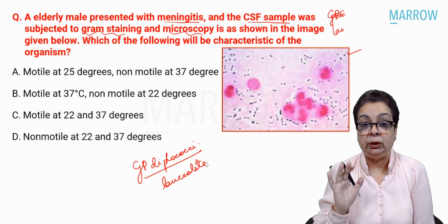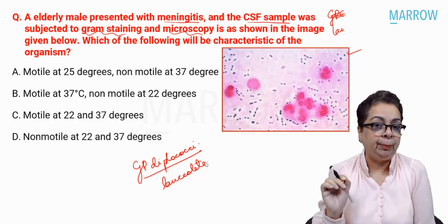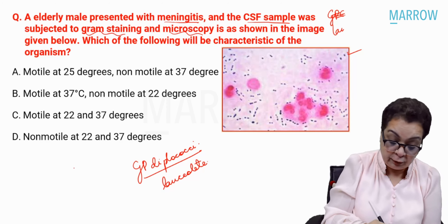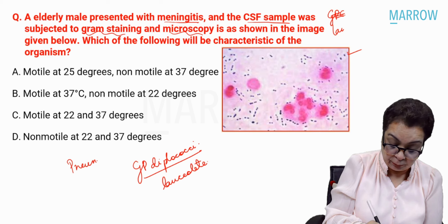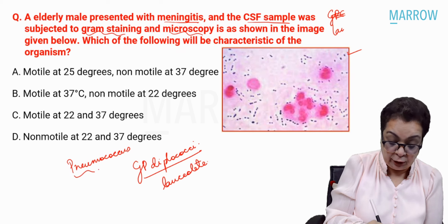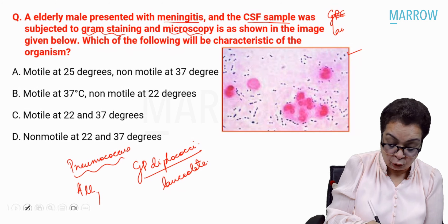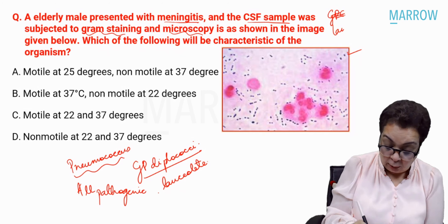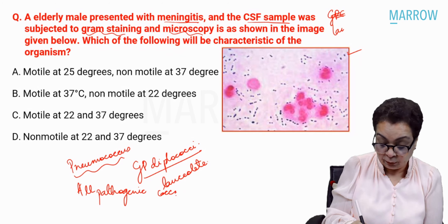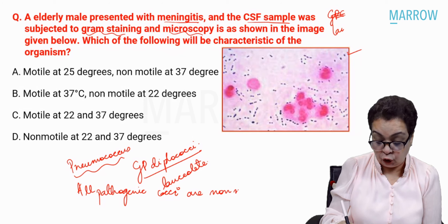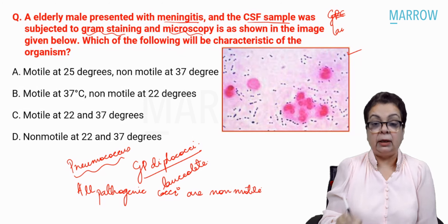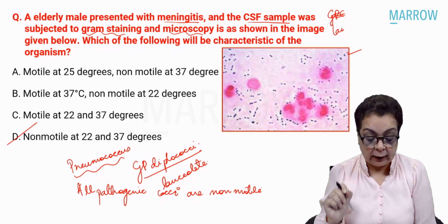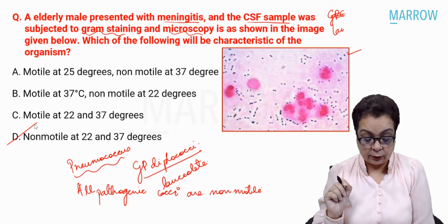If you saw gram-positive diplococci which were lanceolate-shaped, obviously we are thinking of Streptococcus pneumoniae — pneumococcus. All pathogenic cocci are non-motile — that is a blanket rule. So the answer to this question is option D: non-motile at both 22 and 37 degrees Celsius.